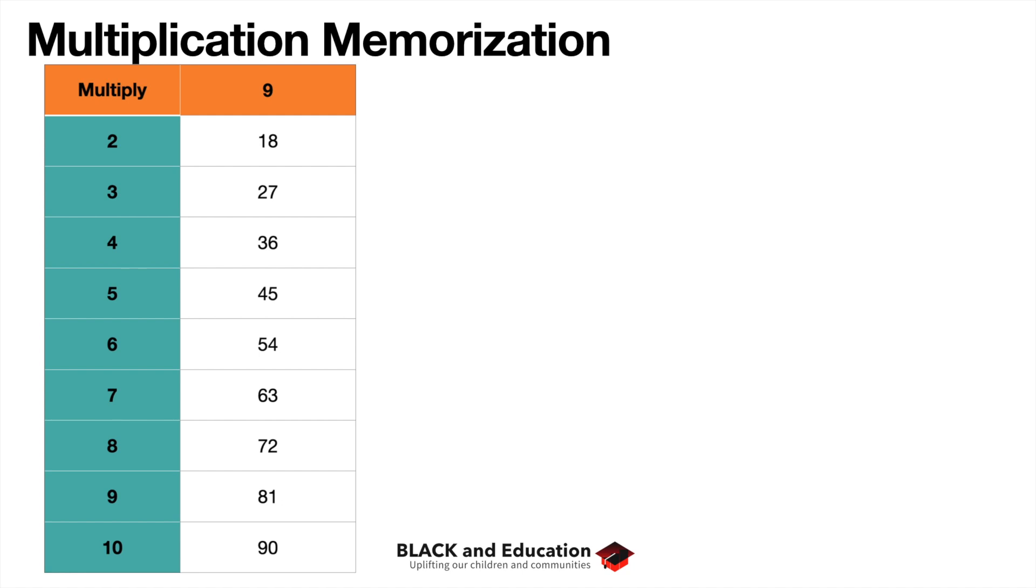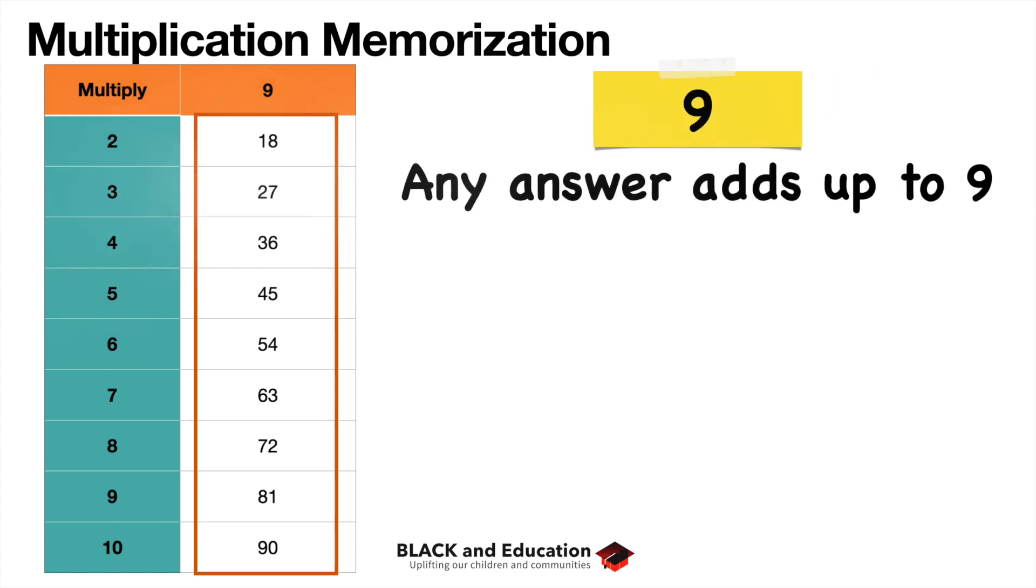Let's see if we can find some ways to multiply by 9 and memorize how we multiply by 9. When we look at that, there's a couple tricks we can really look at. One specific trick.